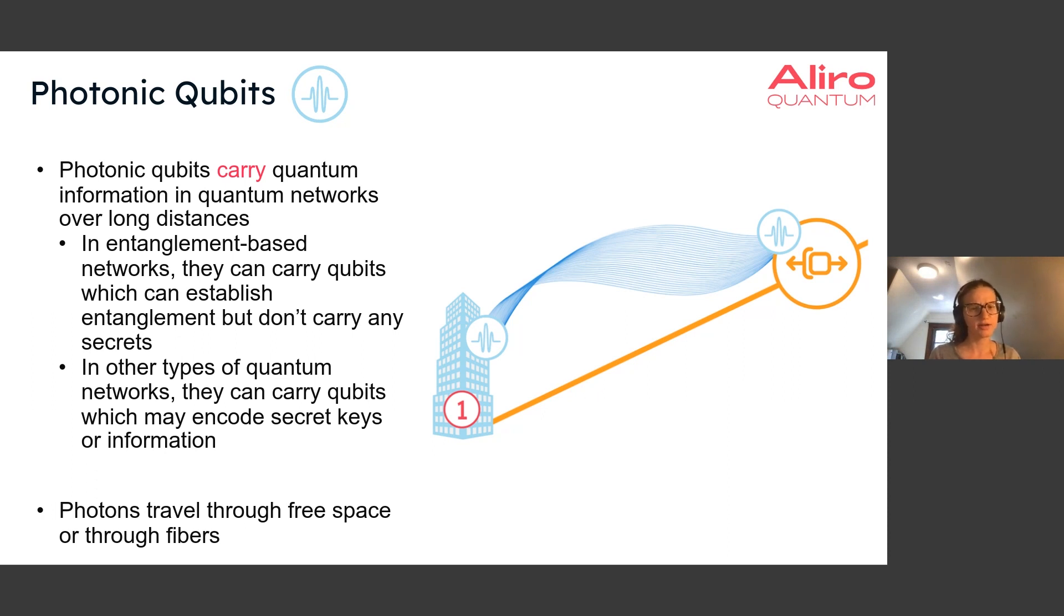So, again, photonic qubits will carry quantum information in quantum networks over long distances. In entanglement-based quantum networks, they will carry qubits which will establish entanglement, but these qubits that they carry don't have to contain any secrets and won't contain any secret information.